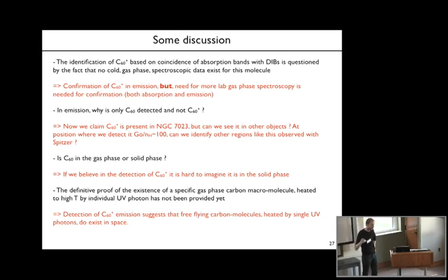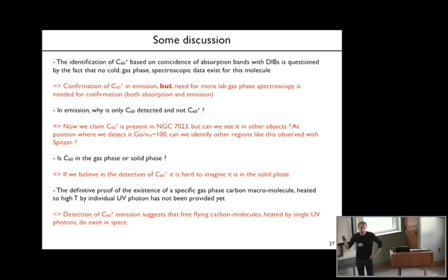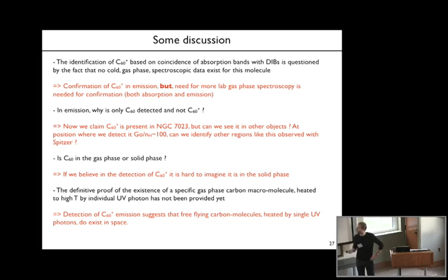This means that the availability of electrons will be very low, so maybe the secret is that you need environments with very few electrons—only in this case can C60+ survive. Something that we don't know—I don't think the electron recombination rate of C60+ has been measured in the lab—is relevant here, because in the same environment we see that all the PAHs are ionized, so it's a little surprising.